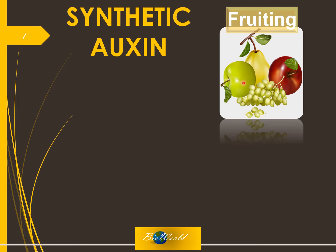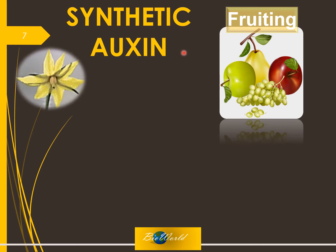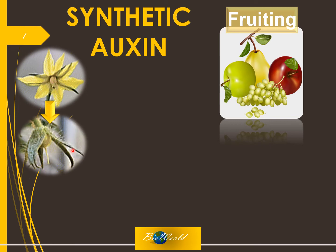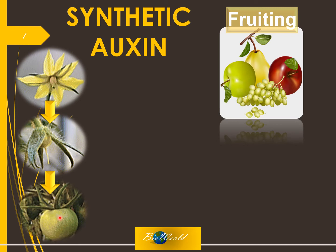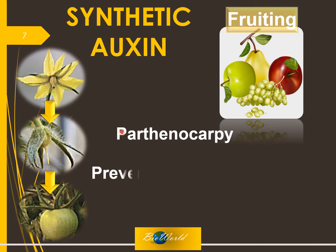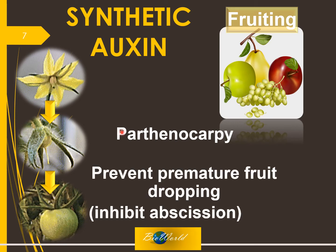Third, synthetic auxin plays a role in fruiting. Auxin is necessary for parthenocarpy — by spraying auxin onto a flower, the petals fall off but the ovary is stimulated to develop into a seedless fruit. Synthetic auxin not only helps create seedless fruits, but also inhibits abscission. So by spraying trees with auxin, it will prevent premature fruit dropping, meaning fruits that have formed will not fall off from the tree quickly.